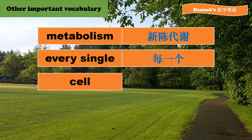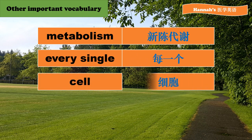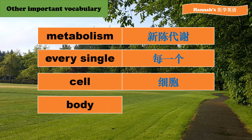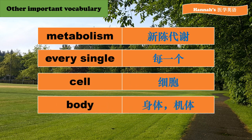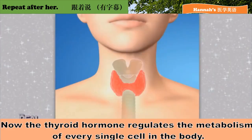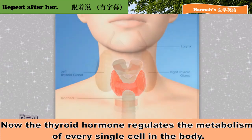Cell，细胞。Body，身体。Now the thyroid hormone regulates the metabolism of every single cell in the body. Now the thyroid hormone regulates the metabolism of every single cell in the body.